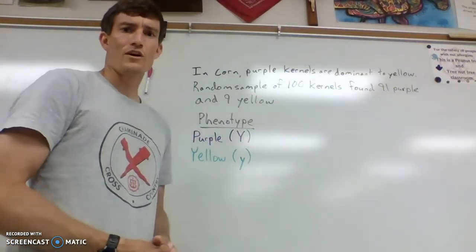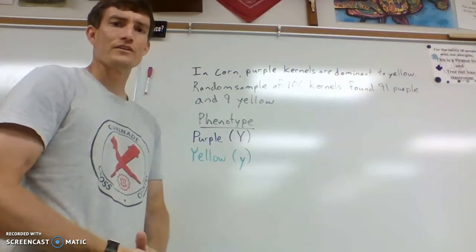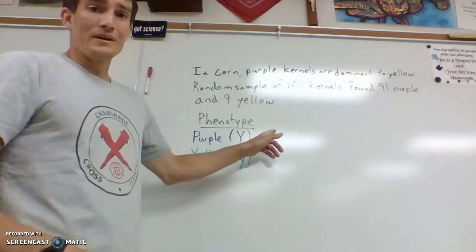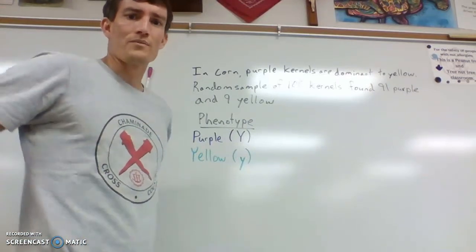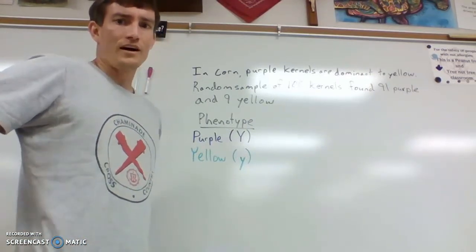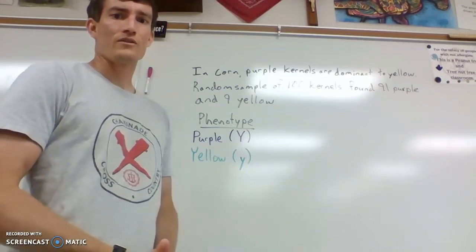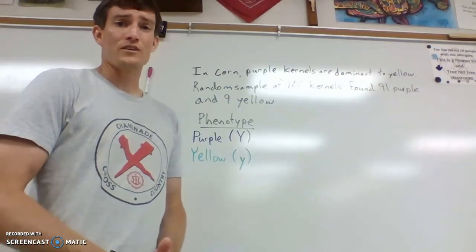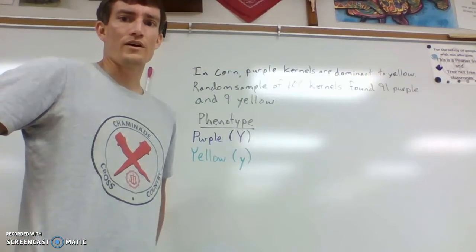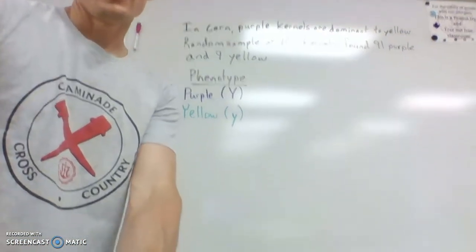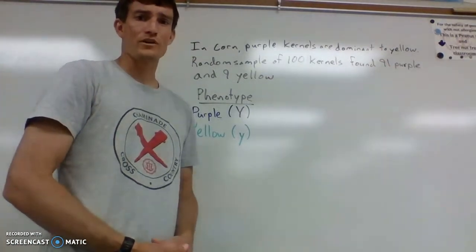I wanted to walk through one of the Hardy-Weinberg problems. This was one that Jack Lake and I talked through earlier today. The question says: in corn, purple kernels are dominant to yellow kernels. This is in a population that's in Hardy-Weinberg equilibrium. A random sample of 100 kernels was found — 91 of them were purple and 9 of them were yellow.